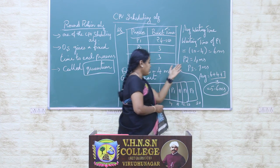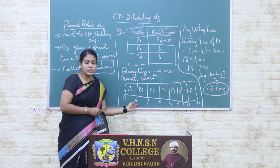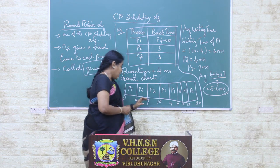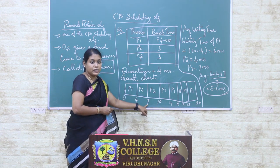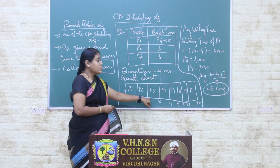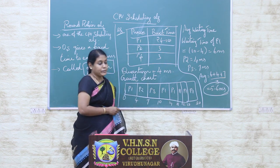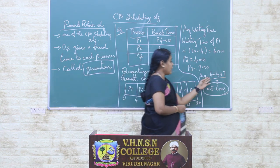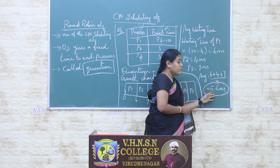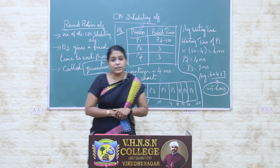The waiting time of P2 is 4 milliseconds, since P2 enters the CPU at the 4th millisecond and finishes its work at the 7th millisecond. The waiting time of P3 is 7 milliseconds, since P3 enters the CPU at the 7th millisecond. The average waiting time is calculated by summing the waiting times of all three processes — 6 plus 4 plus 7 — and dividing by 3, which gives 5.6 milliseconds as the average waiting time.